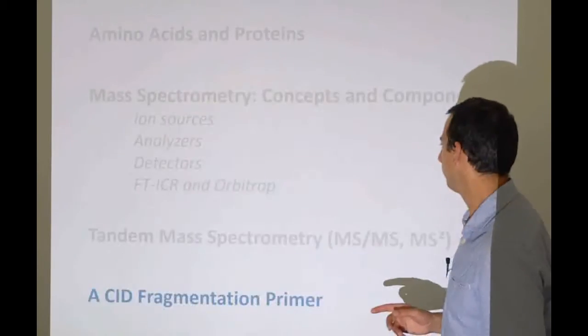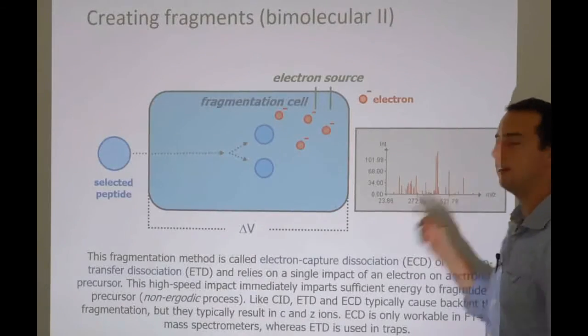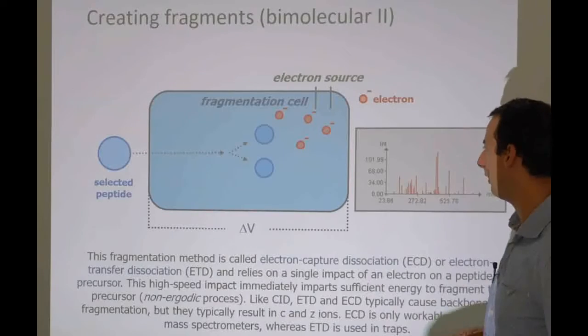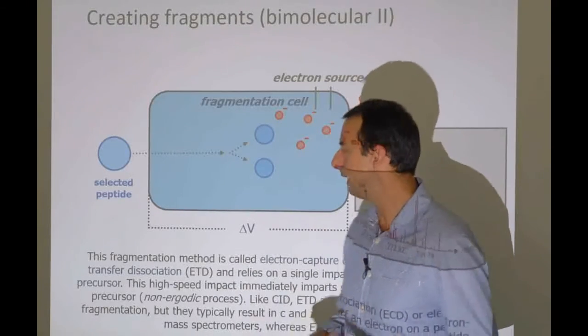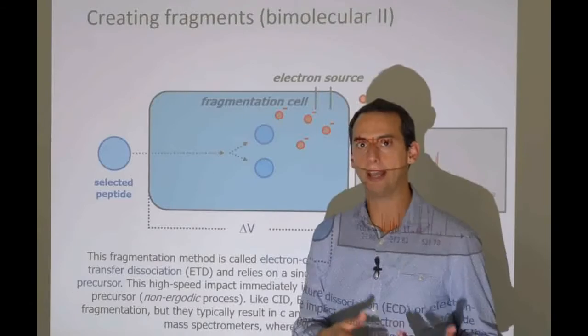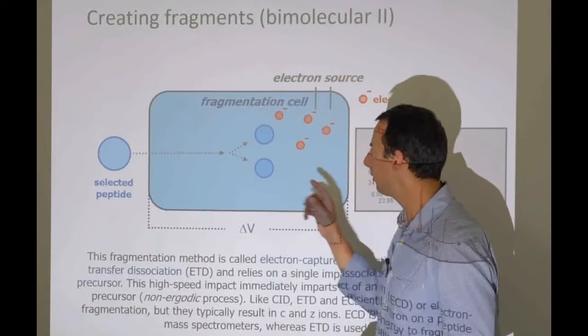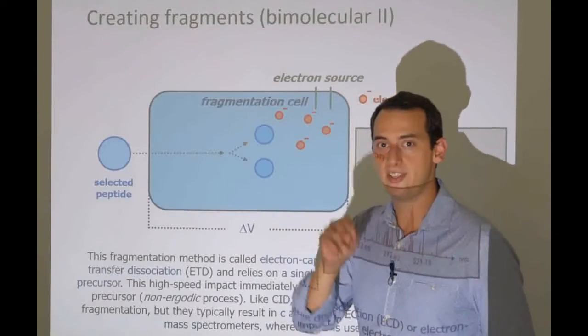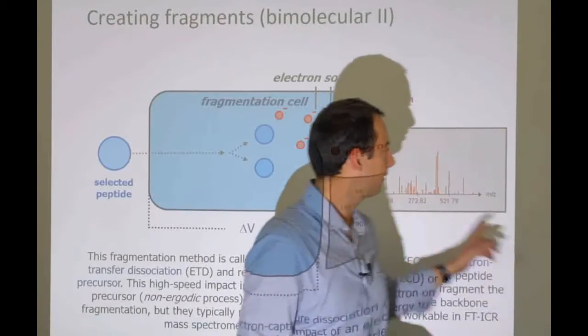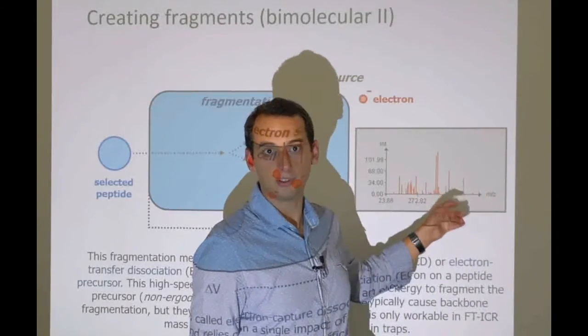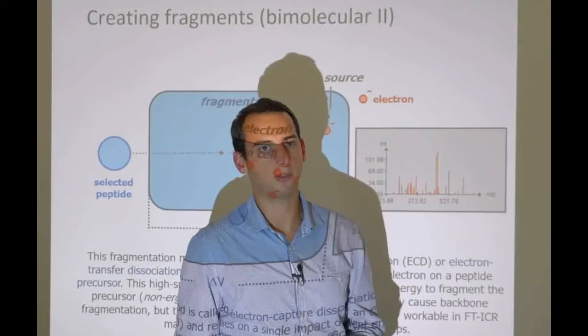While the actual spectrum looks very much the same, it has a very different type of fragmentation. Because it just so happens that this kind of fragmentation, which is called ETD electron transfer dissociation or electron capture dissociation, these methods will yield C and Z ions. So this is a different type of ion that we get. So these peaks, they're usually not B or Y ions anymore. They're C or Z ions. So you have to interpret the spectrum in a very different way.